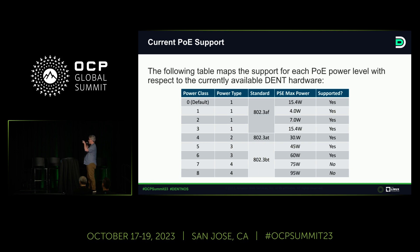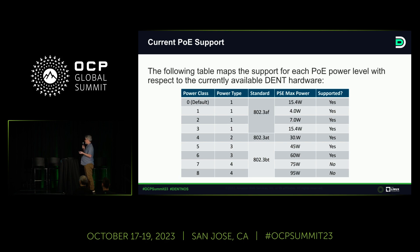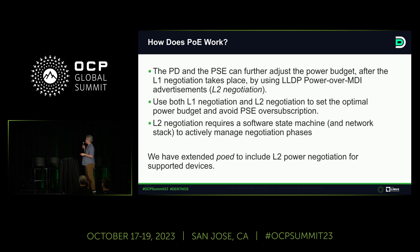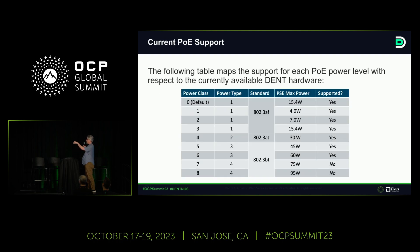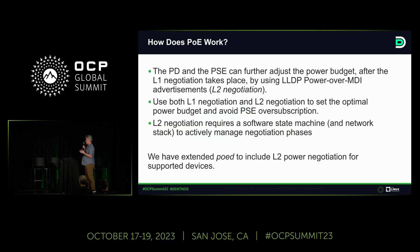The code currently in GitHub supports AF and AT — up to about 25 to 30 watts per port. To go beyond that, there's a newer part of the spec called BT that goes up to 95 watts, but we're deploying 60-watt devices right now. This is important for understanding how L2 negotiation works. The system has a total power budget based on the power supply, and eventually the server runs out of power and devices can't connect.